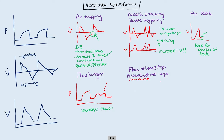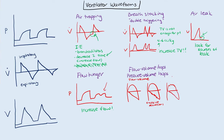One of the problems that you may see is in a patient with excessive secretions — you may see this kind of scratchy appearance. You're going to have to try and treat the patient's secretions. You can also see it on the inspiratory limb, and that would be a sign of excessive condensation in the tubing, so you definitely want to dry that out.